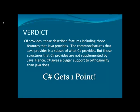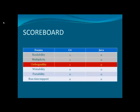At last, it's a verdict related to orthogonality. C-Sharp provides those described features including all features that Java provides. The common features that Java provides are a subset of what C-Sharp provides, but the structures that C-Sharp provides are not supplemented by Java. Hence, C-Sharp gives bigger support to orthogonality than Java. C-Sharp is way ahead of Java in the factor of orthogonality, so C-Sharp gains a point and is still in the lead.